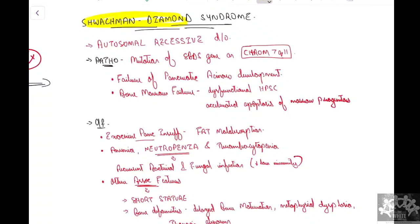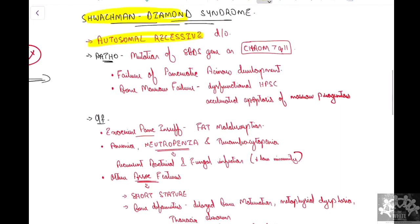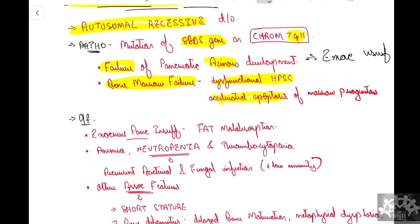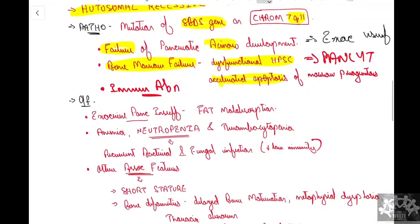Shwachman-Diamond syndrome is an inherited condition with autosomal recessive inheritance. The mutation is in the SBDS gene located on chromosome 7q11. This causes: failure of pancreatic acinar development leading to exocrine insufficiency; bone marrow failure with dysfunctional hematopoietic stem cells; and accelerated apoptosis leading to pancytopenia. There are also associated immune abnormalities, which along with pancytopenia contribute to recurrent infections.